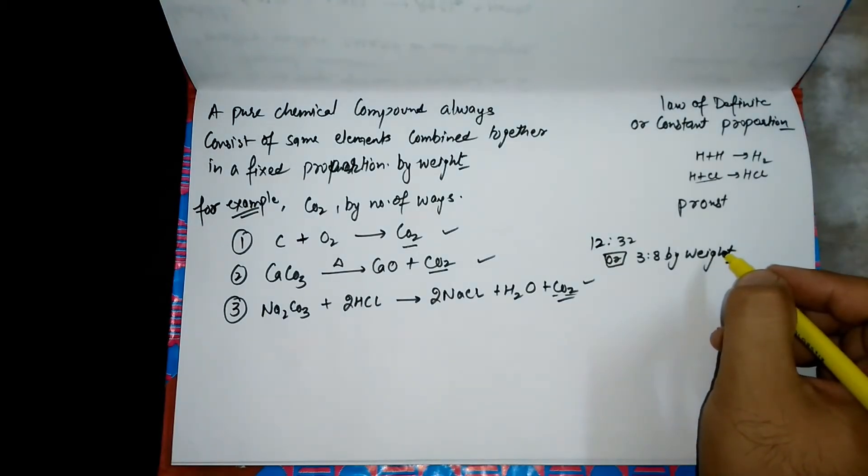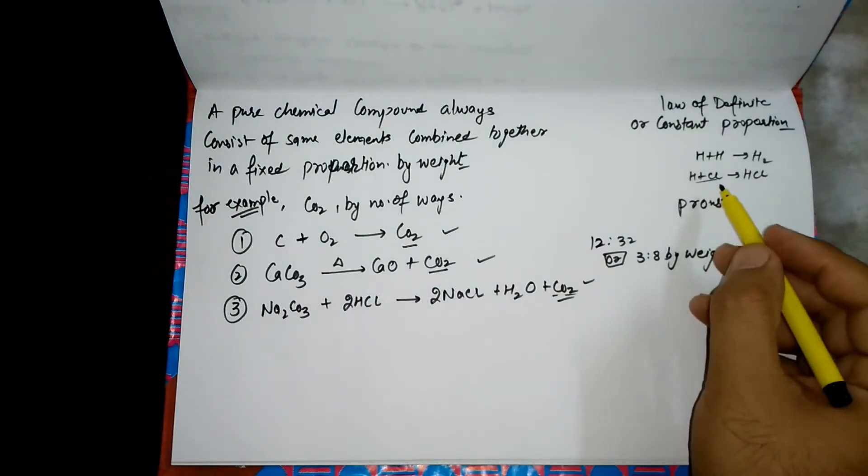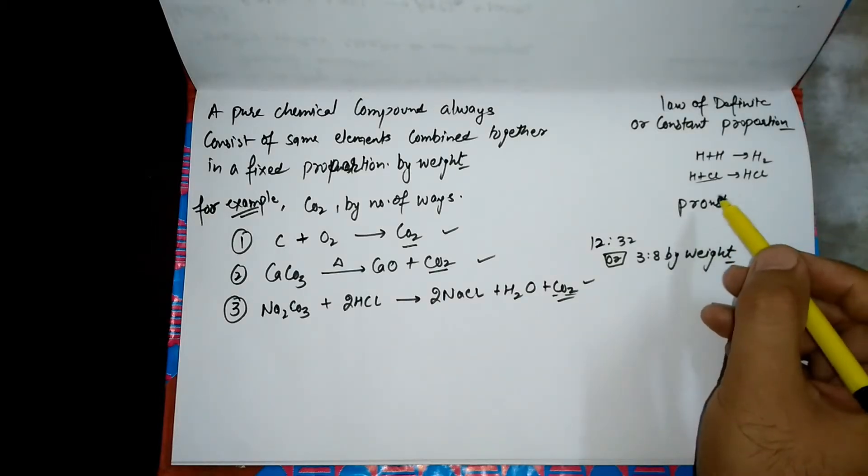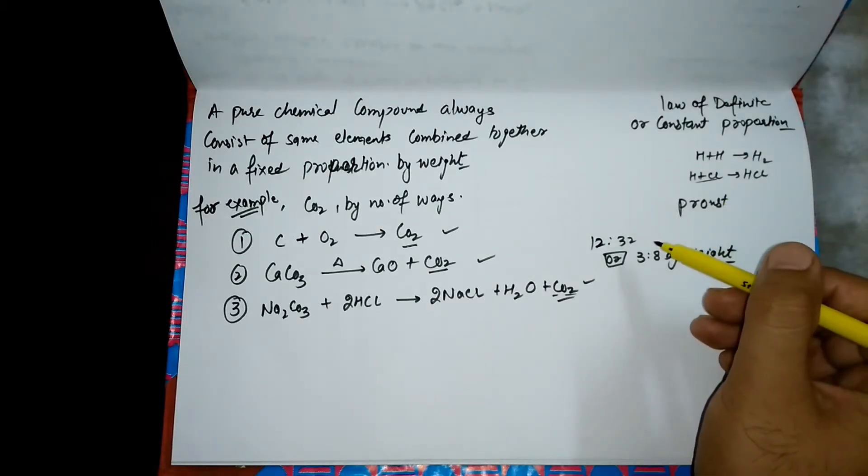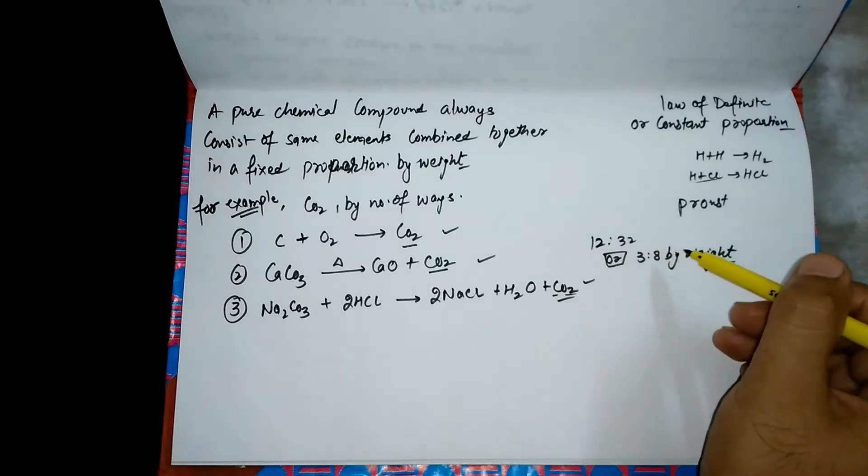This is law of definite constant proportion. Remember one thing: the chemical compound must be pure. If it has some impurity, the law is not applicable.